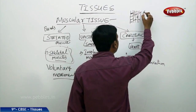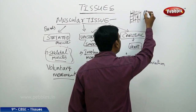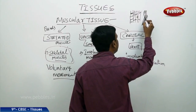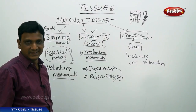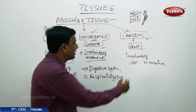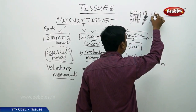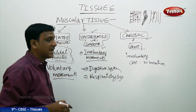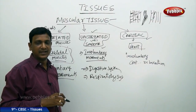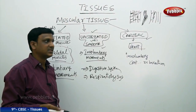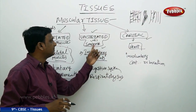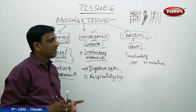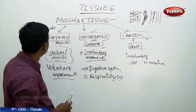Smooth muscle cells are long spindle-shaped smooth cells with no bands and a nucleus at the center — involuntary movement, no striations. The cardiac muscle, however, looks like striated muscle — it has striations — but functions like smooth muscle in that it is involuntary. So the structure of cardiac muscle is similar to striated muscle, while its functioning is similar to smooth muscle, which is why it is classified separately.